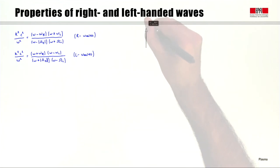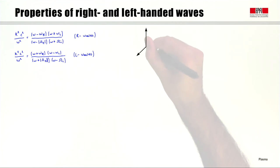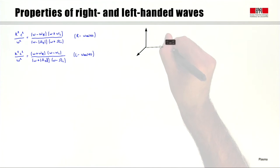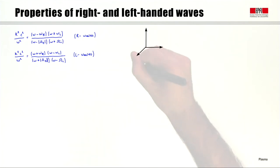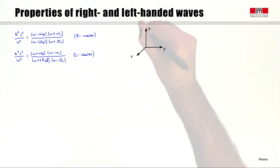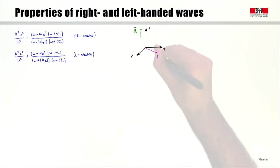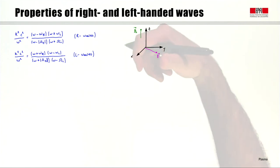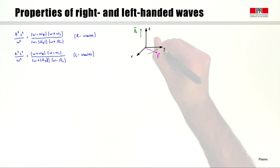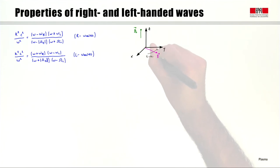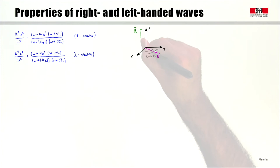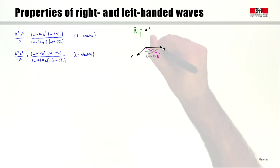Why are these waves called right-handed and left-handed? If we draw our coordinate system with x, y, z and the equilibrium magnetic field B0 along the z direction, then for these waves the electric field lies in the x–y plane. What we saw in the last module is that this electric field rotates according to the right-hand rule with respect to B0 for the right-handed waves, while it rotates in the opposite direction for the left-handed waves.